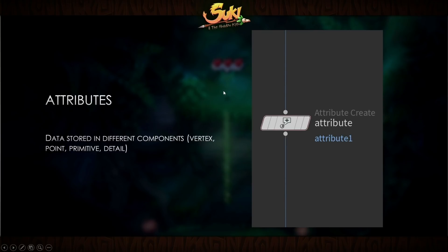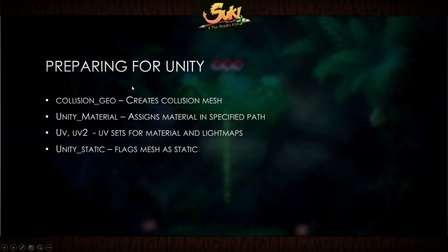If we want to control Unity-specific properties, we can do that directly in Houdini using attributes. Attributes are information that we can save into the model — Houdini Engine reads that before sending it to Unity and applies certain properties. Some key things we can do: if we group some geometry using the collision geo name, we create a collision mesh; we have the unity_material attribute to assign any material we need; we have UVs to send to Unity; and we can also modify static flags and much more.